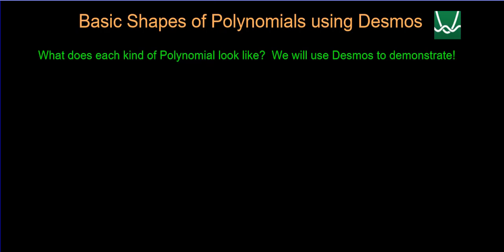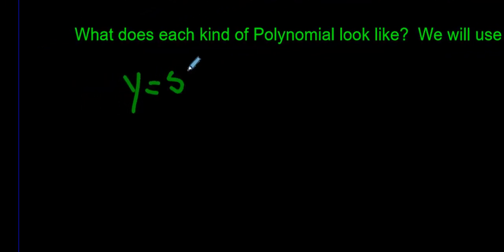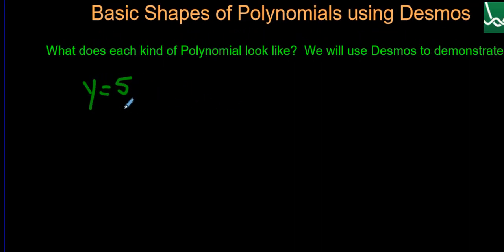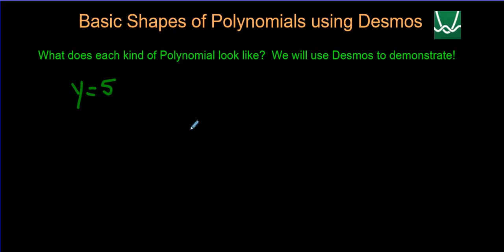Let's start at the beginning here. Here is a basic situation, we have y equals five, it's just a number. This would be a graph, could you imagine what that graph looks like before I even show you with Desmos?